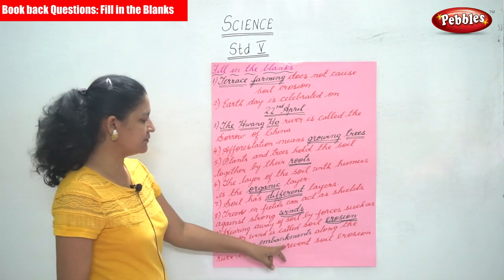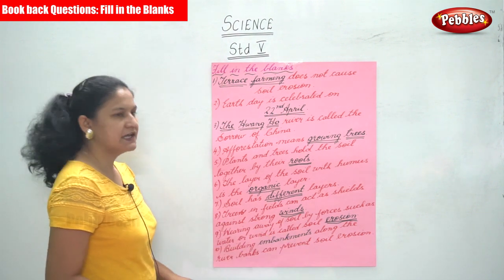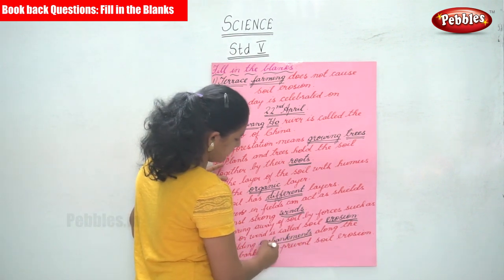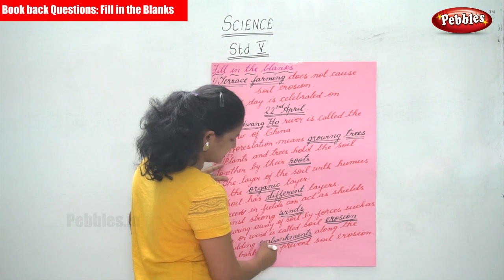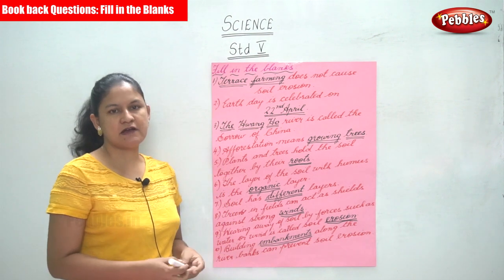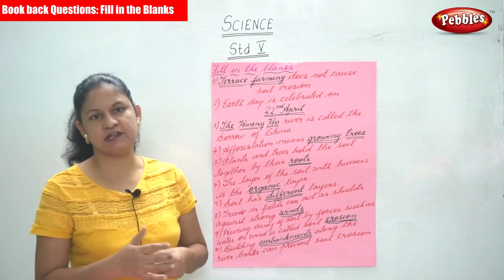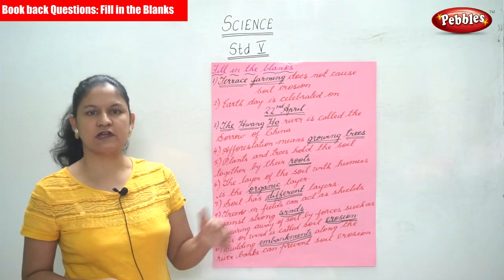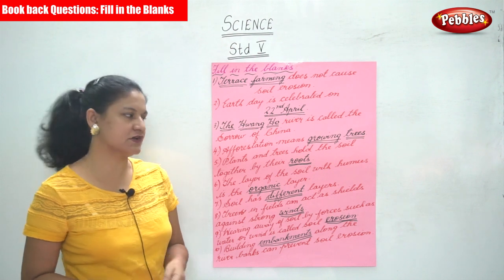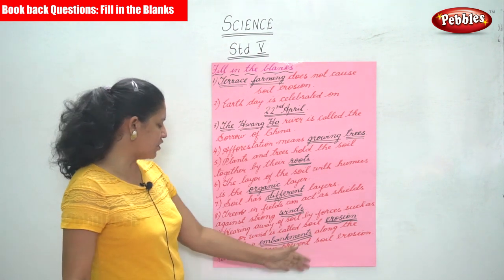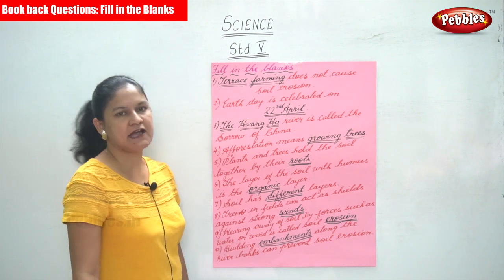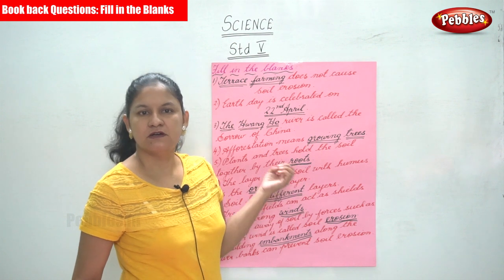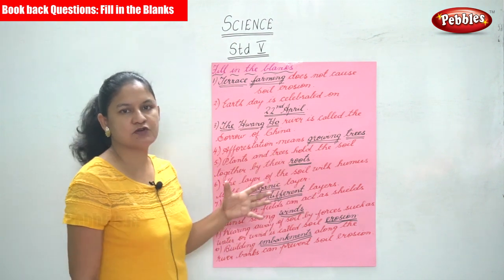The next answer: building embankments along the river banks can prevent soil erosion. We have learned that these embankments help prevent soil erosion. These are some of the fill in the blanks that we have come across in our lessons.